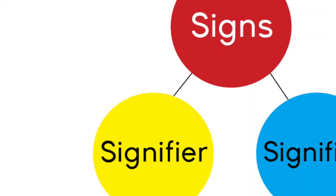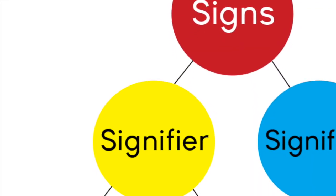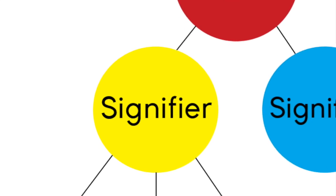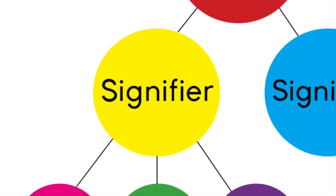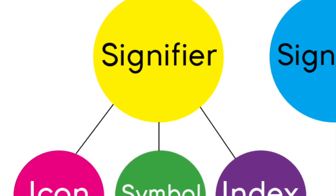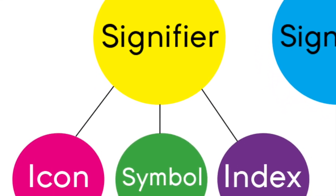Now, signifiers can be categorized into three different types of signs: icons, symbols, and indexes.